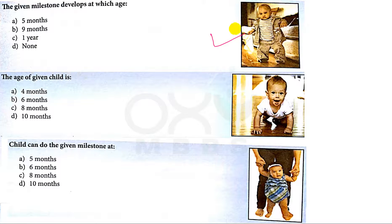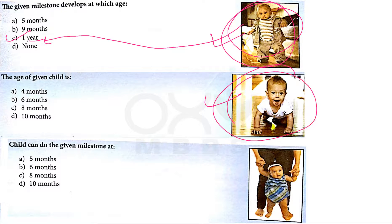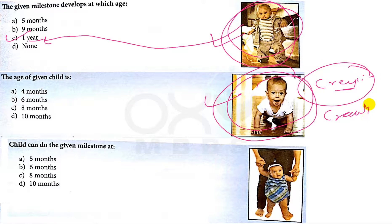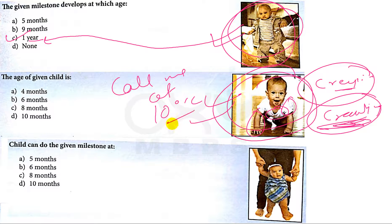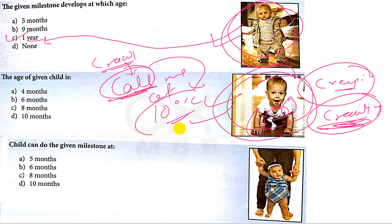Now in this picture, the baby is standing without support, which is achieved at around one year. So C is the correct answer. Now in this next picture, the baby is crawling — not creeping — because both hands, chest, and abdomen are above the ground. Crawling is achieved at 10 months — from 'crawl' we derive 'call,' and call me at office time, which is 10 o'clock. So crawling is achieved at around 10 months of age.